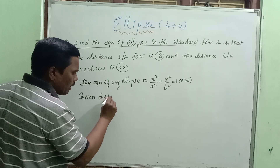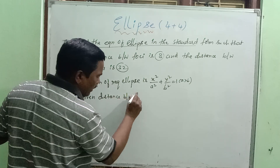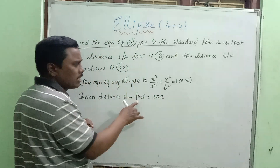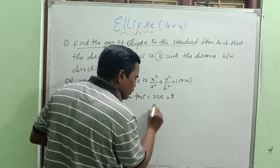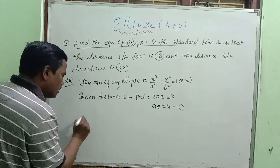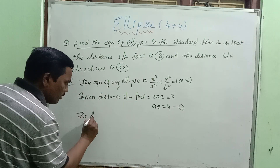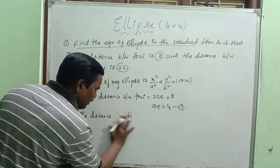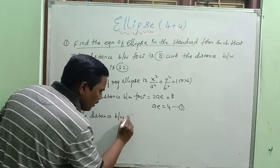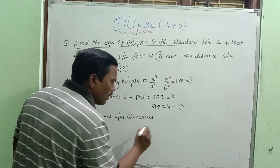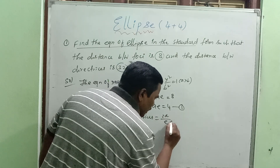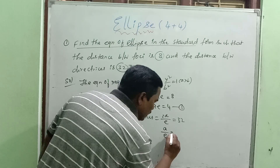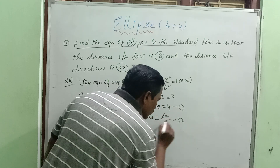Given: distance between the foci = 2ae = 8, so ae = 4. Distance between directrices = 2a/e = 32, so a/e = 16.